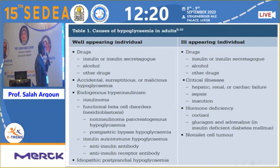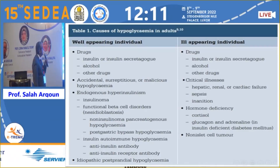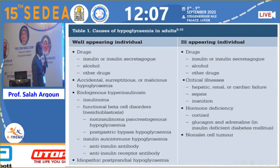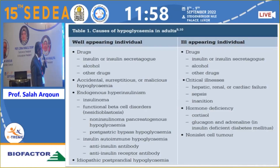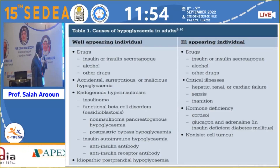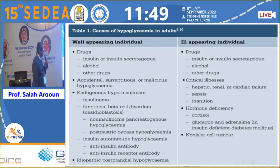For causes of hypoglycemia in well-appearing adults, we have drugs such as insulin, insulin secretagogues, alcohol, and other drugs; and accidental, surreptitious, or malicious hypoglycemia. There is also endogenous hyperinsulinism, which is a combination of insulin and functional beta cell disorder — nesidioblastosis — or non-insulin-mediated hypoglycemia. And post-gastric bypass hypoglycemia.